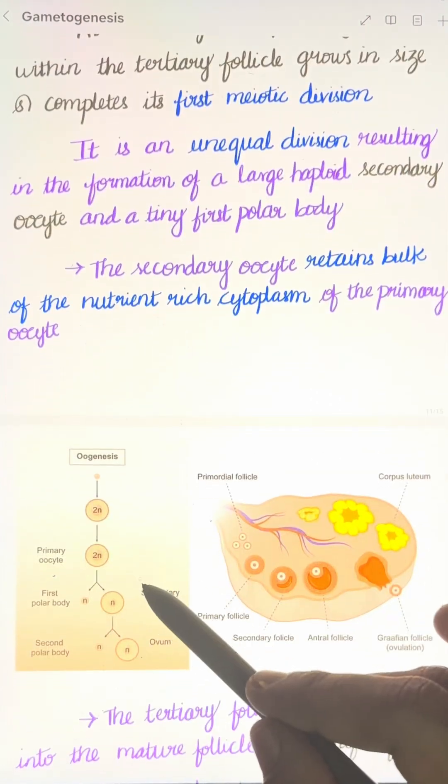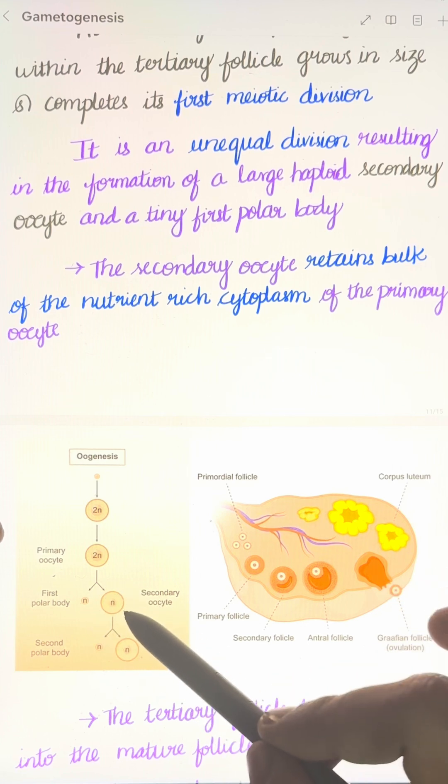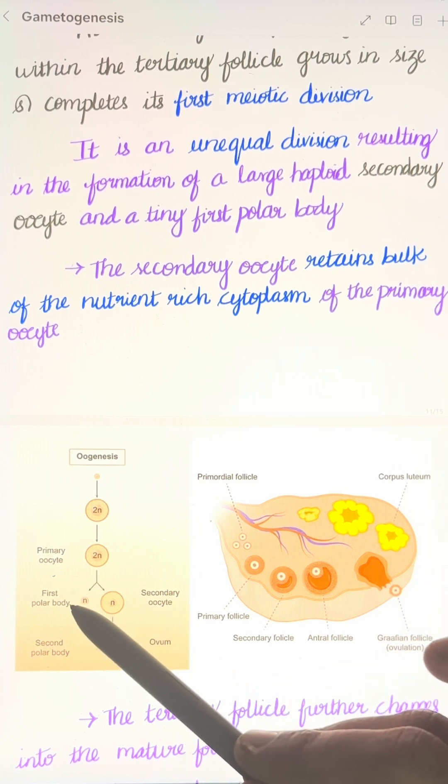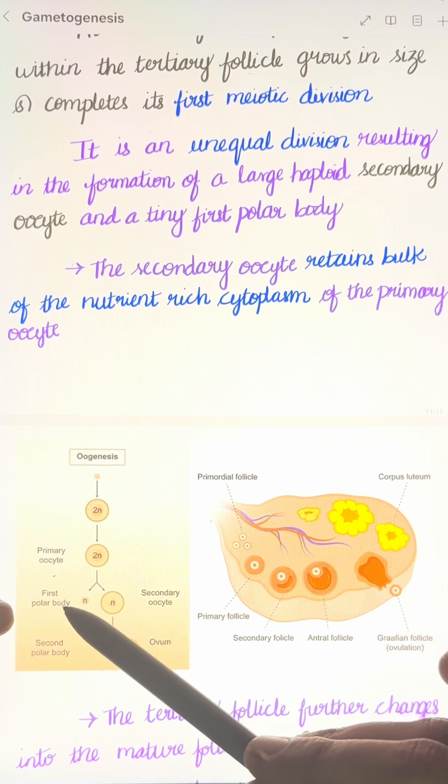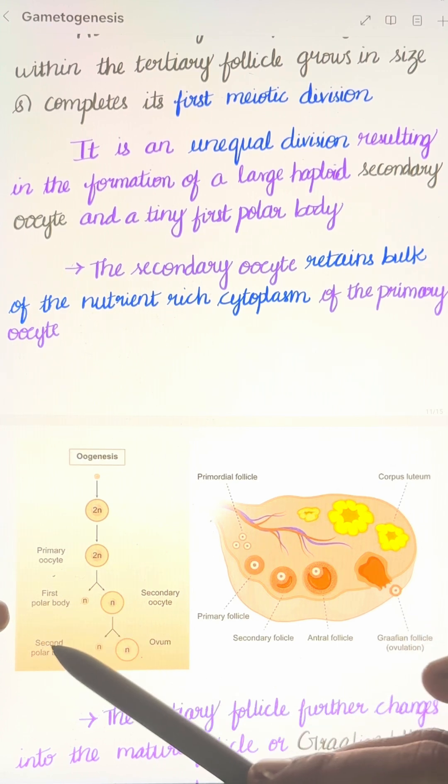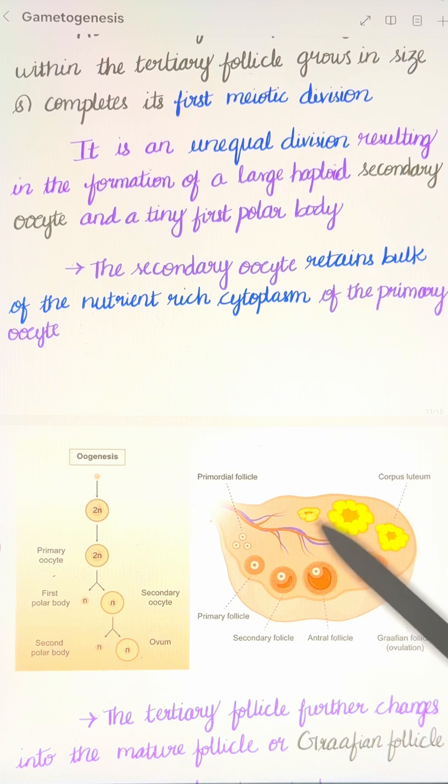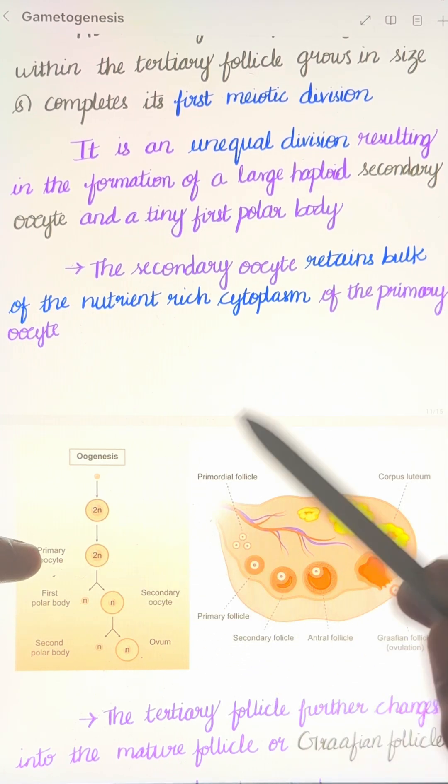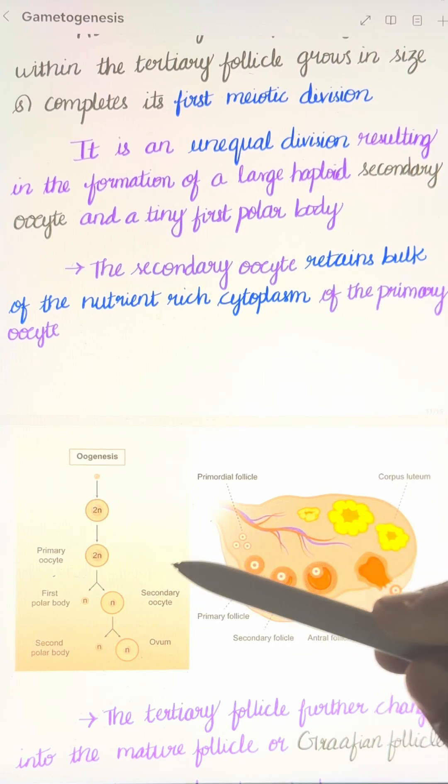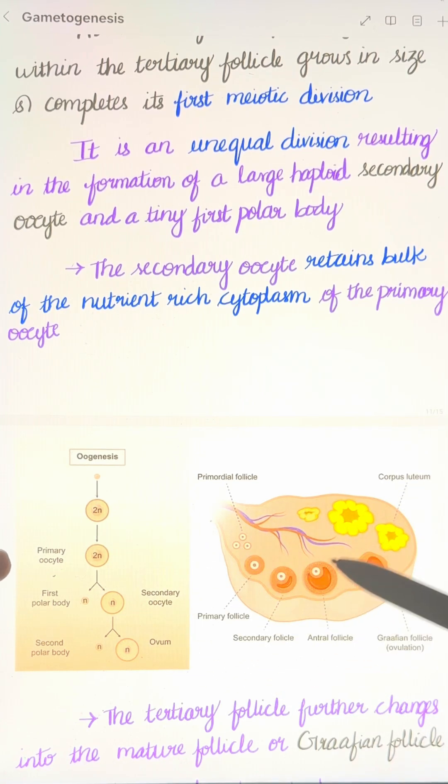This is an unequal division, forming a large haploid secondary oocyte. The secondary oocyte retains the bulk of the nutrients and cytoplasm from the primary oocyte to nourish the developing embryo at the early stage.